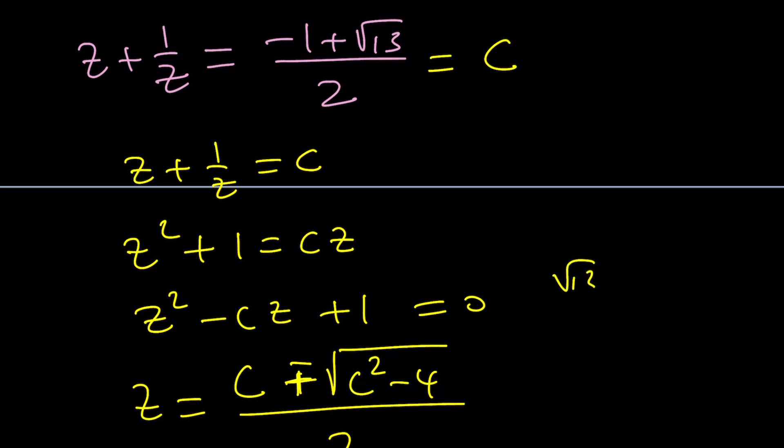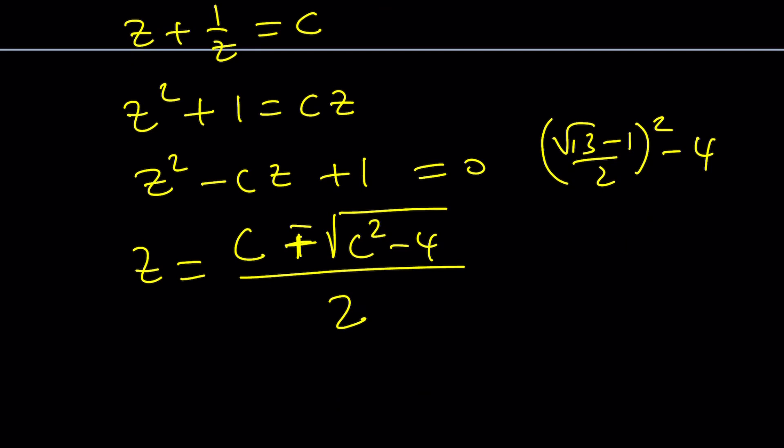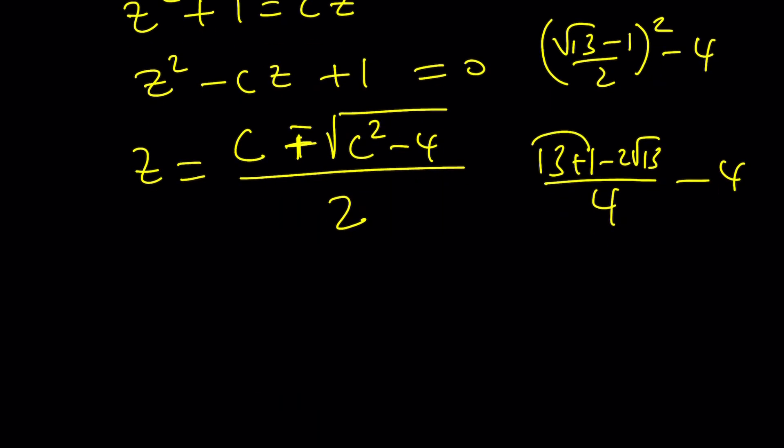You're going to square this number and subtract 4 from it. Do you think that's going to be positive? Let's find out. How do you plus 1 minus 2 root 13 divided by 4 minus 4 and that'll be a 14 and then minus 16. 14 minus 16 is negative 2. Uh oh.